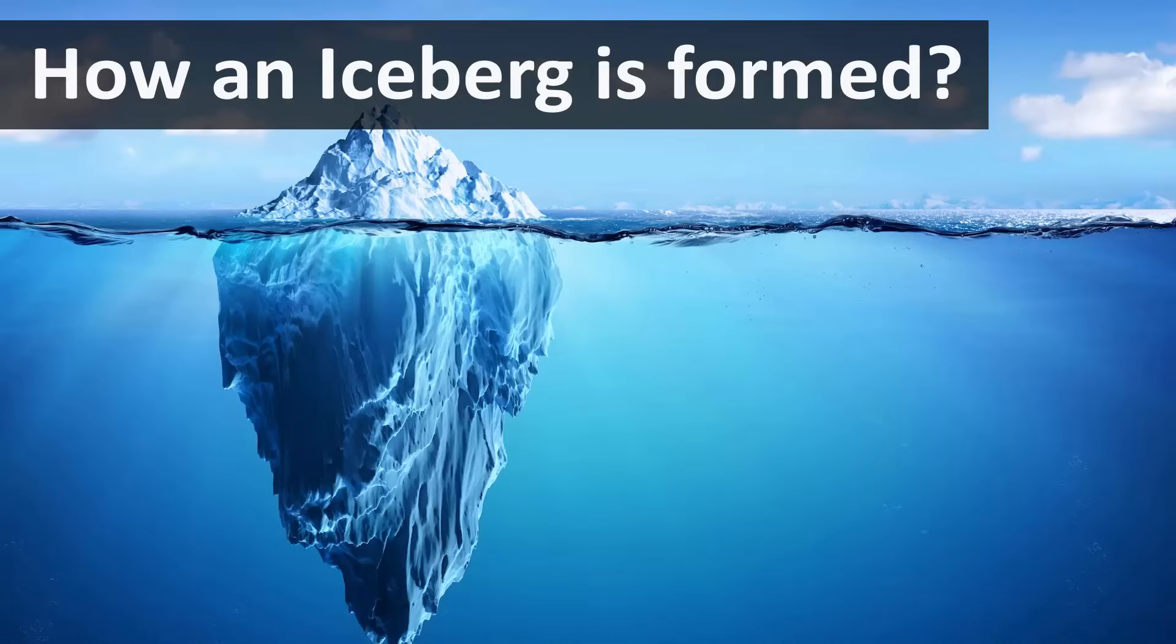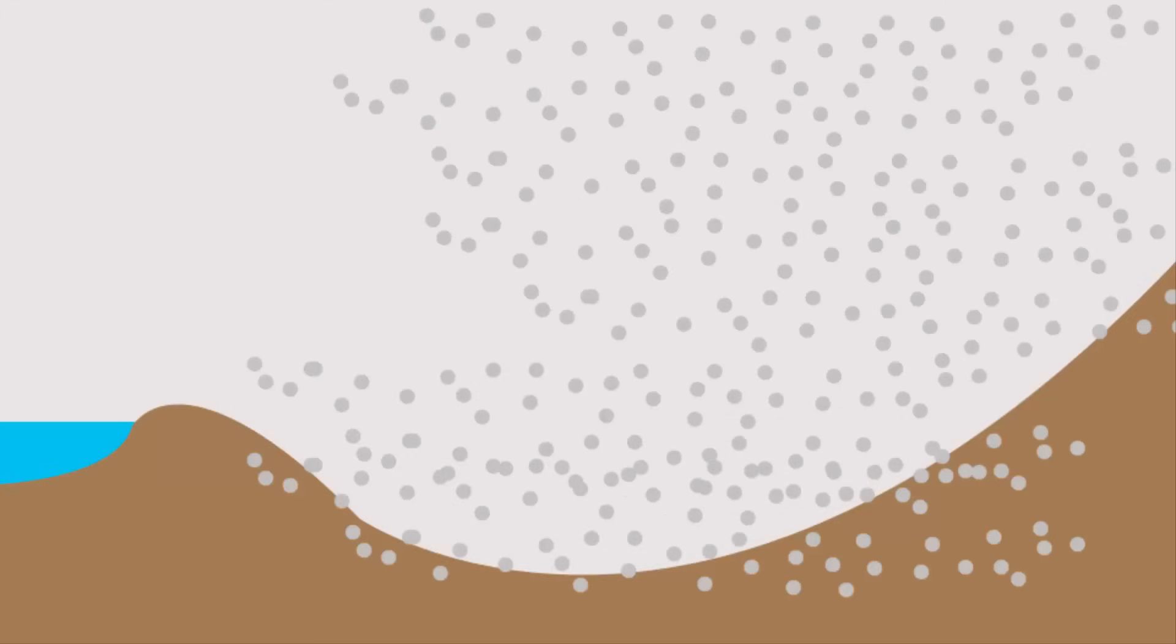In this video, we will learn how an iceberg is formed. When a big piece of ice breaks from a glacier and reaches open sea or ocean water, that is known as an iceberg.